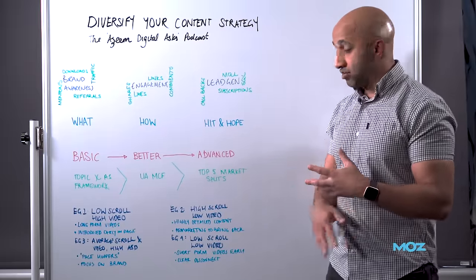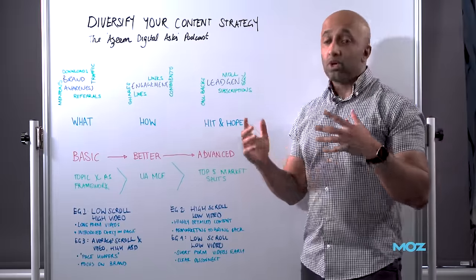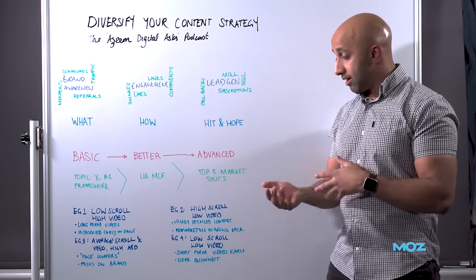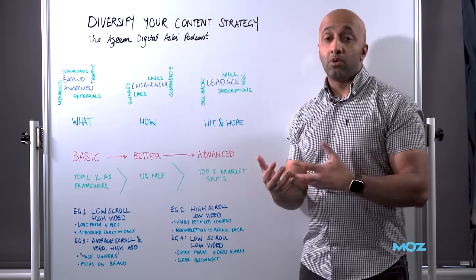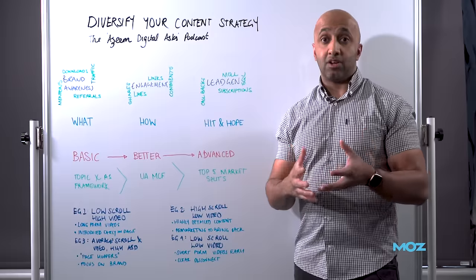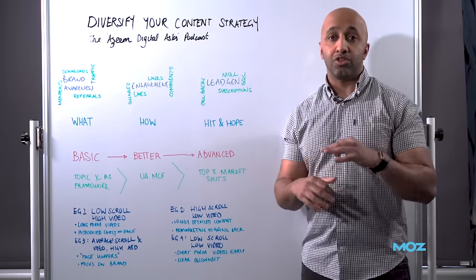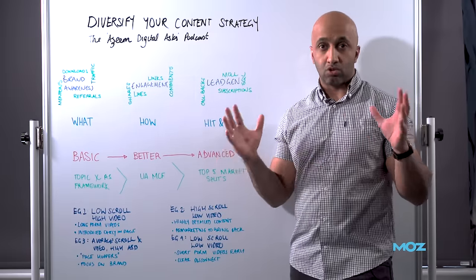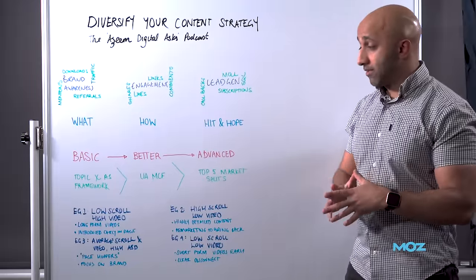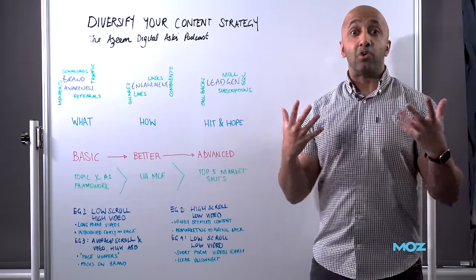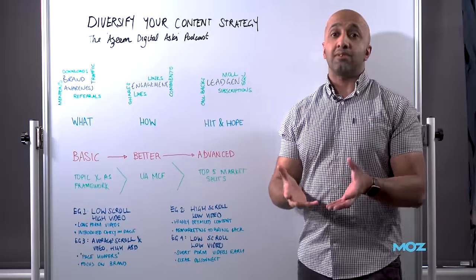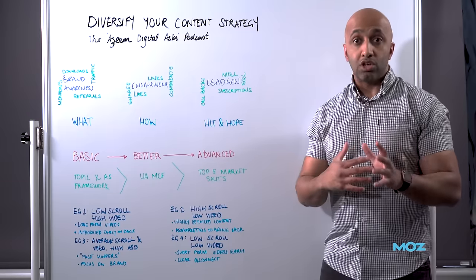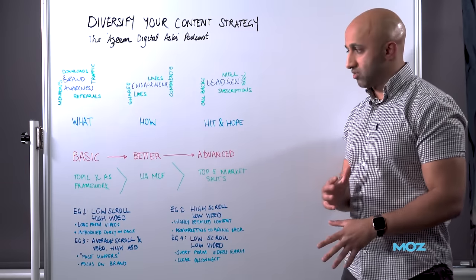The advanced version would be looking into GA4, splitting out your top five markets as I've put there, understanding how they perform with a data-driven attribution model, and creating the right content for the audience at the right time — the holy grail of what we are trying to achieve here. I'll give you four examples of how you can actually use this information and literally from tomorrow be able to improve your content strategy.